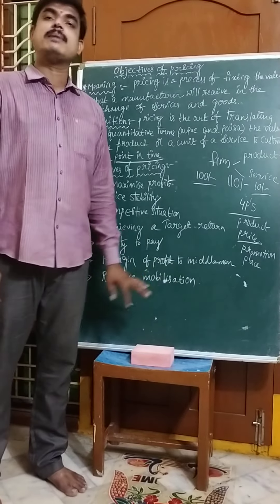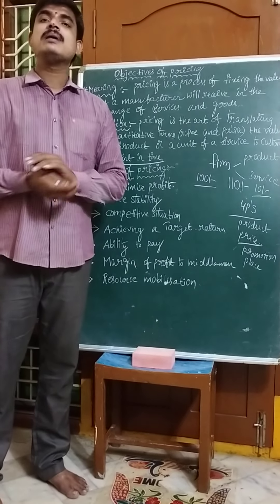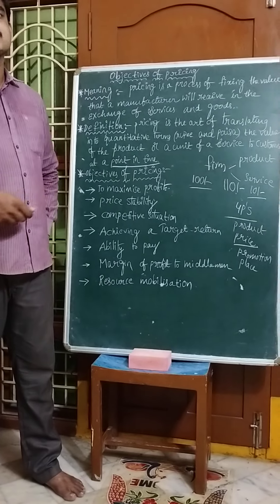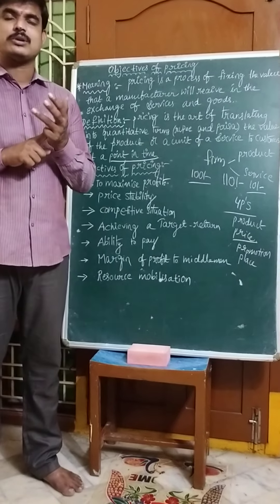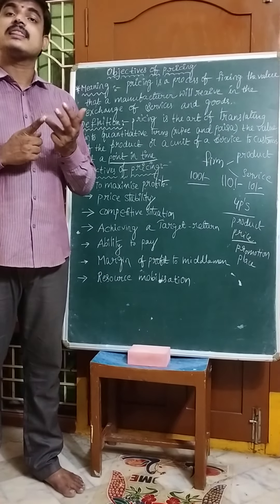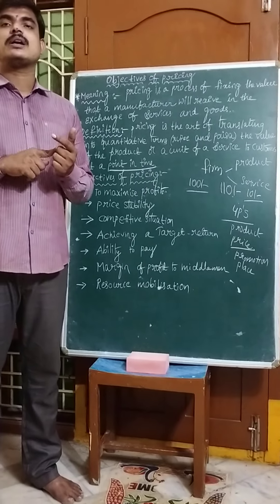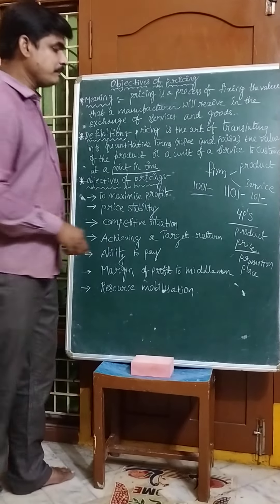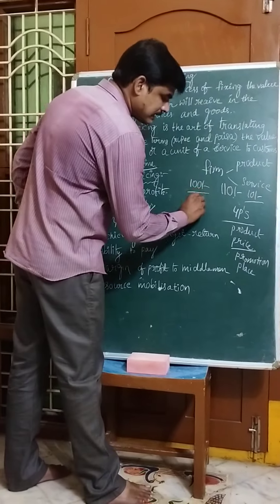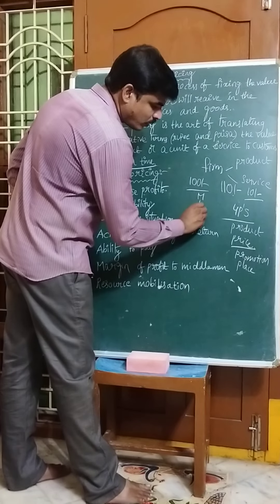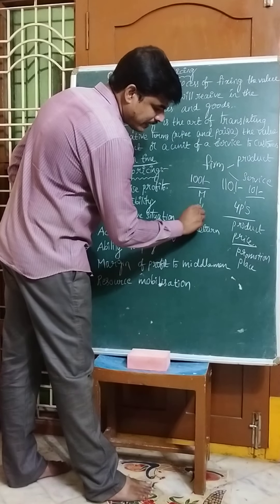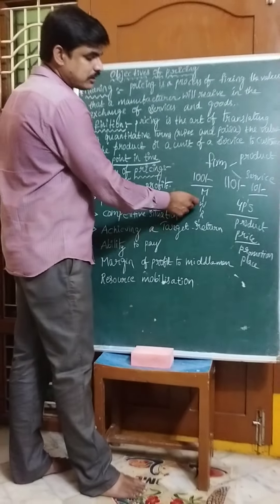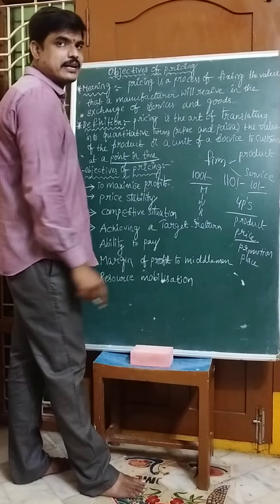Next is margin of profit to middlemen. For example, there are many distribution channels — many manufacturers, wholesalers, retailers, and customers. We have to consider the manufacturer, wholesaler, retailer, and customer. There are many wholesalers and retailers involved in this chain.